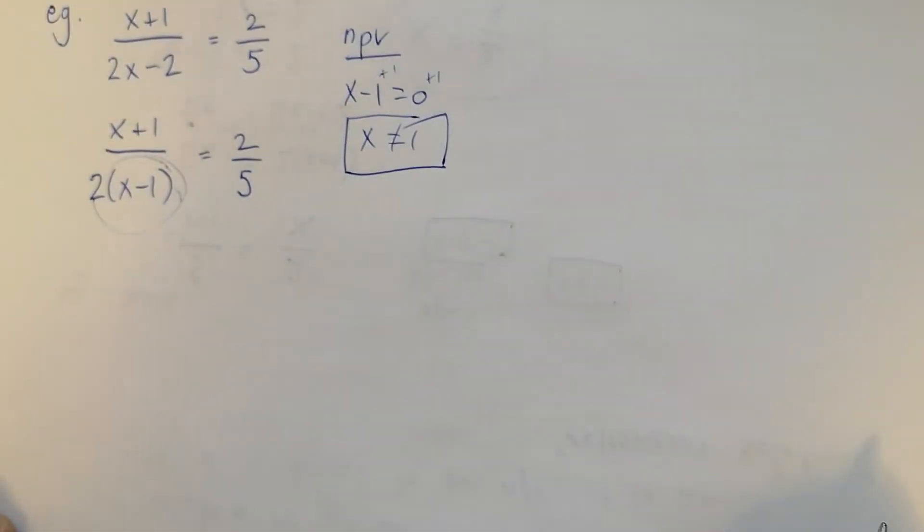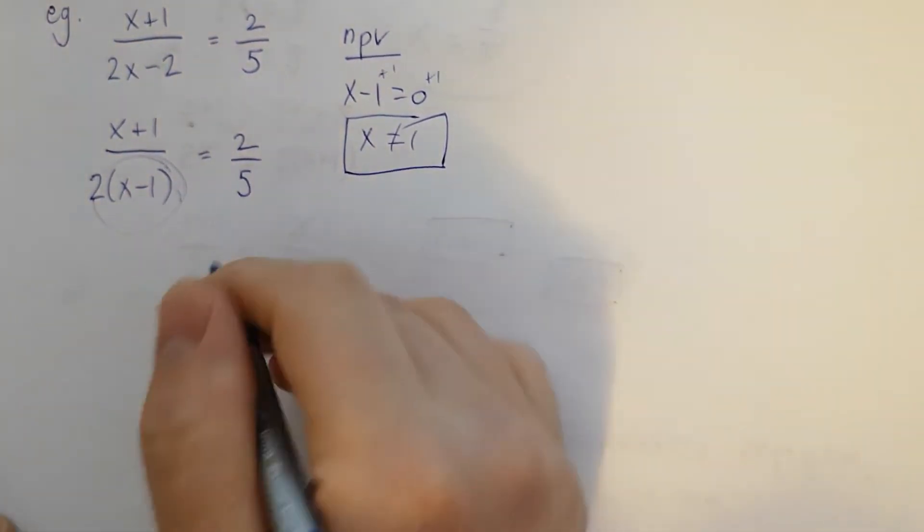So as long as I don't get x equals one as an answer, the answer will be valid. So let's go back to what we got here. The next step was to cross multiply.